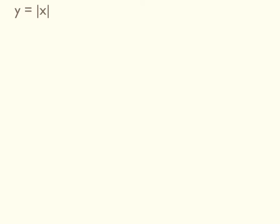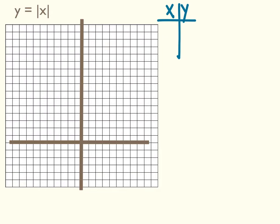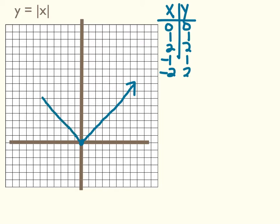If we were to graph the absolute value of x, it would look like this. Starting with 0: the absolute value of 0 is 0, the absolute value of 1 is 1, the absolute value of 2 is 2. So on the right we have a line with a slope of 1. But the absolute value of negative 1 is 1, and negative 2 gives us 2, so we get a line on this side with a slope of negative 1.